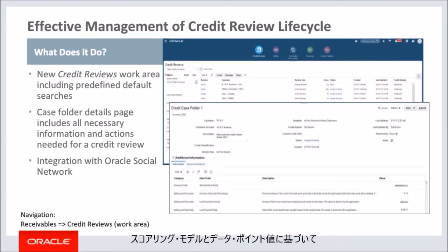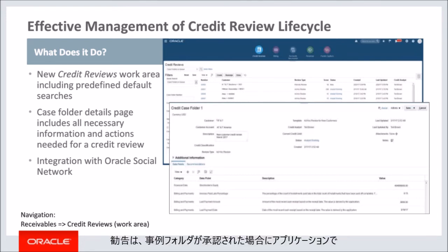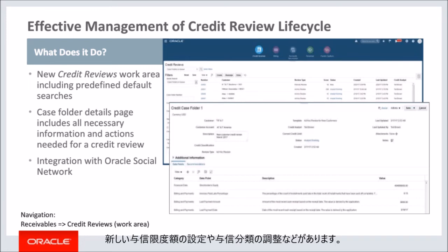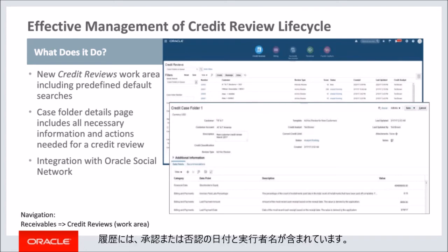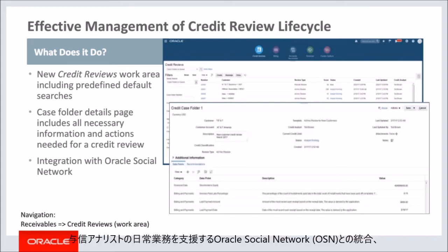You can view how the credit score is derived based on the scoring model and the data point values. When the credit score cannot be calculated due to missing data point values, you can enter the data point values and recalculate the score. You can also create and edit recommendations — a set of predefined actions that the application will implement automatically when the case folder is approved. Examples include setting a new credit limit and adjusting the credit classification. You can also view the approval history of the case folder, including records of when and by whom an approval or rejection took place. The available actions in the actions menu are refresh data, approve, reject, request for information, and withdraw. Integration with Oracle Social Network, attachments, and notes are also available on case folders.